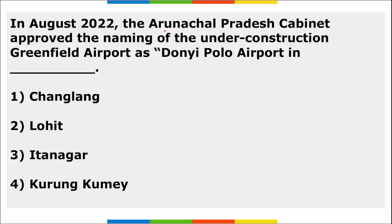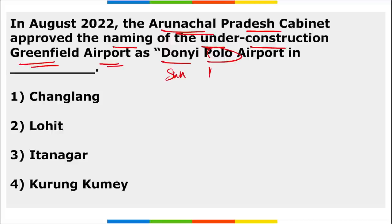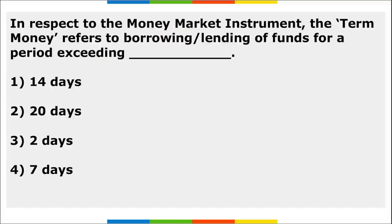The Arunachal Pradesh cabinet approved the naming of the under-construction greenfield airport as Donyi Polo Airport. In the name, 'Donyi' stands for Sun and 'Polo' stands for Moon. This airport is located in Itanagar, Arunachal Pradesh.